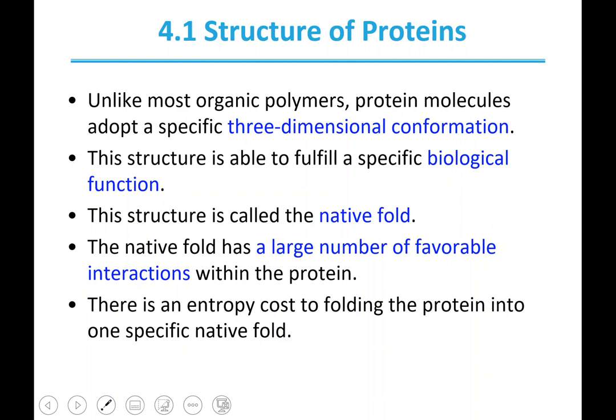This native protein structure has a large number of favorable interactions inside the protein, and that's not surprising. There's a huge entropy cost for folding a protein. A protein in a random coil of amino acids has a high degree of entropy and freedom. Once it folds into one specific structure there's a lot less freedom, and that has a huge entropic cost. To offset that, there's a large number of favorable interactions inside a folded protein.